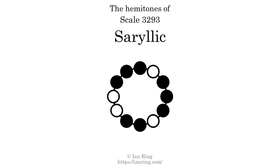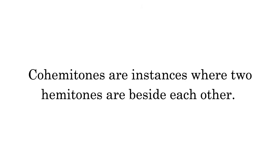Co-hemitones are instances where 2 hemitones are beside each other. This scale has 2 co-hemitones. They are at positions here and here.